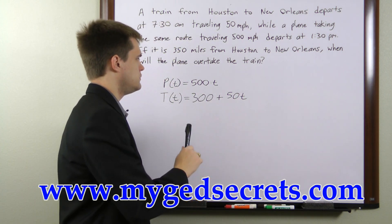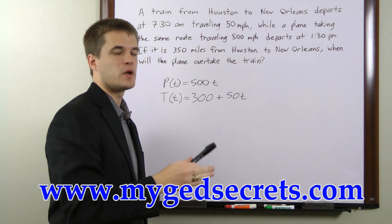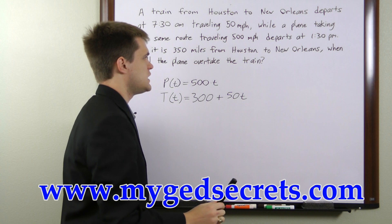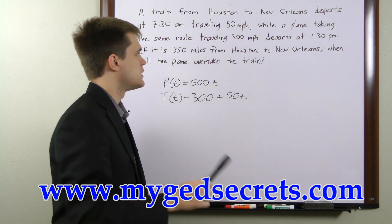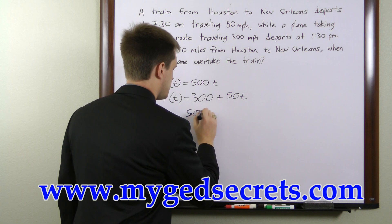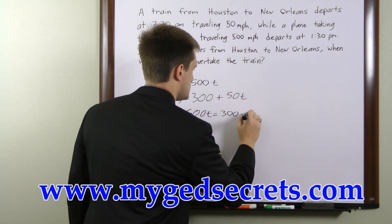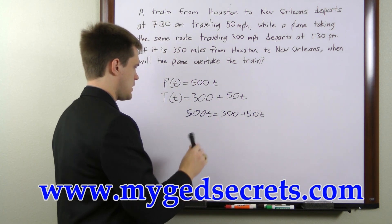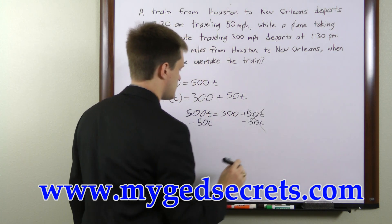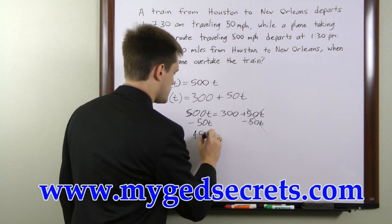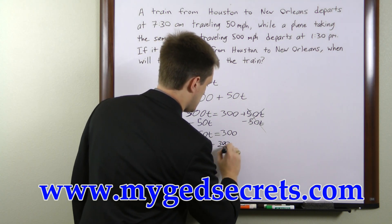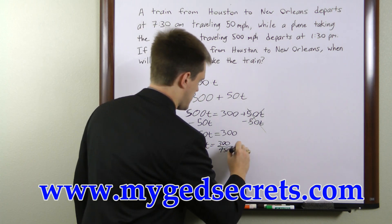Now to figure out when the plane overtakes the train — another way of saying that is when are they at the same position. So we'll set these two equations equal to one another and solve for t. That will tell us how long after 1:30 it is that the plane overtakes the train. We can write this as 500t equals 300 plus 50t. Subtracting 50t from both sides gives us 450t equals 300, or t equals 300 over 450, which is the same as 2 over 3.